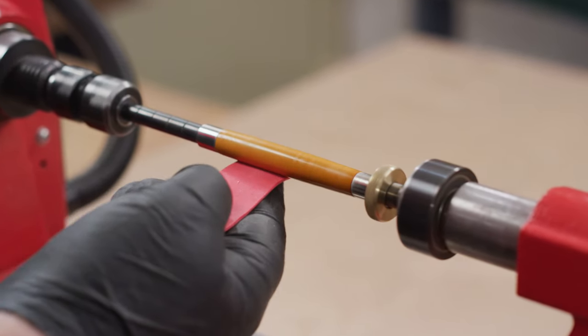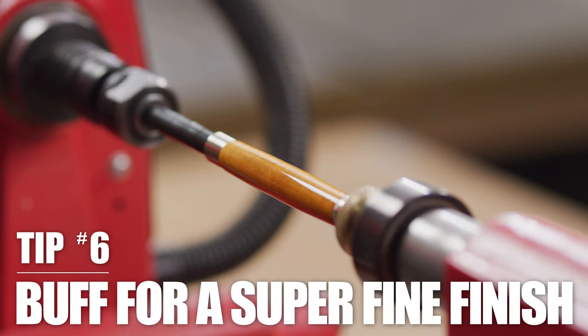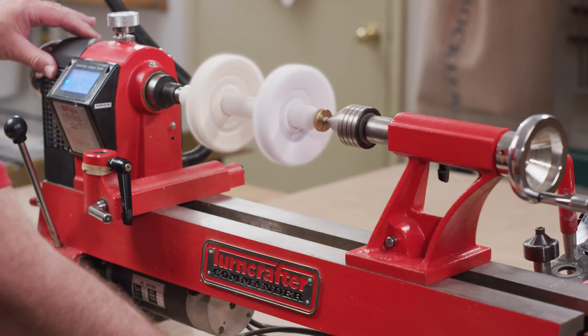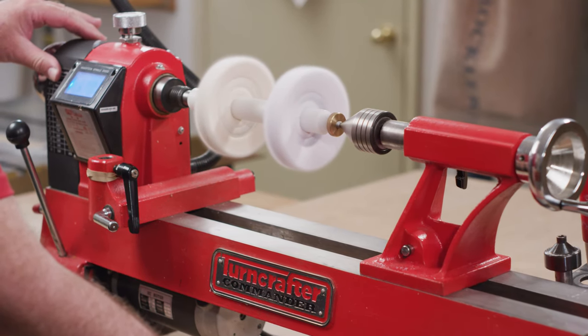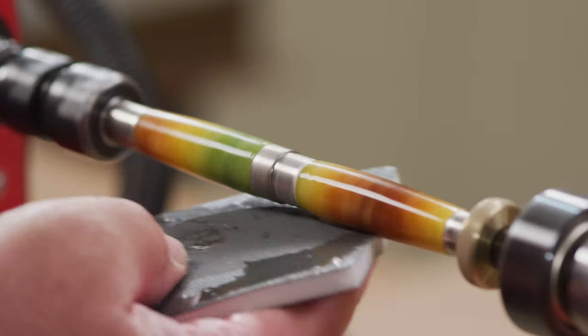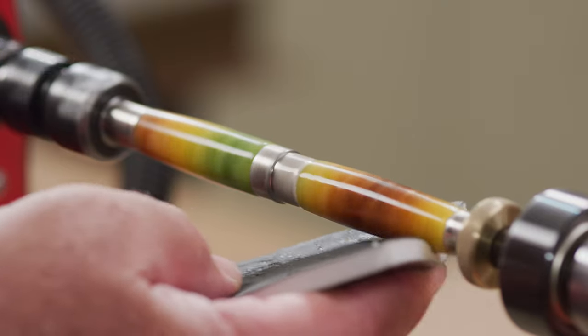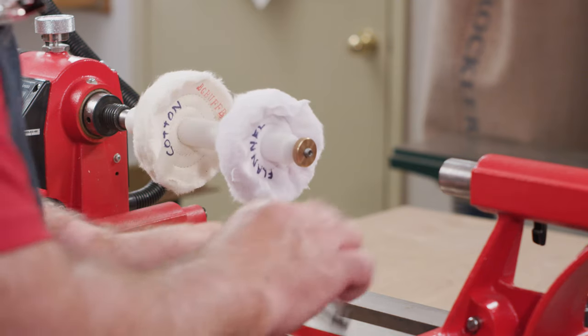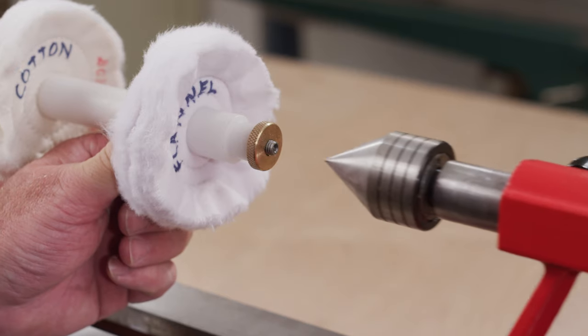Go the extra mile and create a pen with a super fine finish with high luster using the acrylic pen buffing system. This system works great on acrylics and cyanoacrylate-finished wood pens. After sanding the turned pen parts to 12,000 grit, insert the mandrel onto the lathe and add the cotton and flannel buffing wheels.